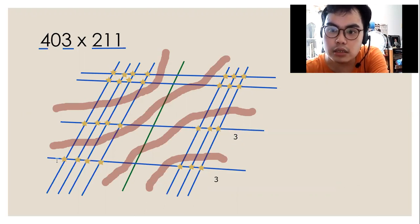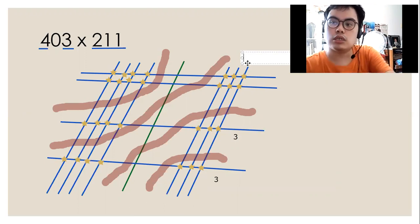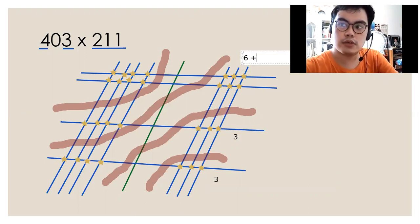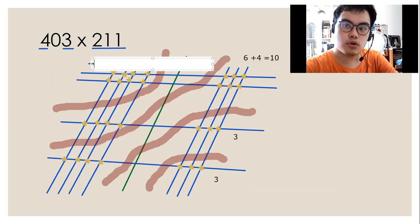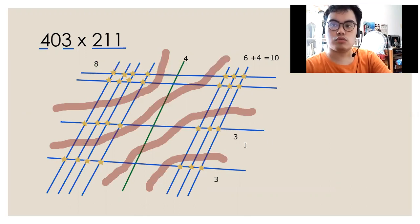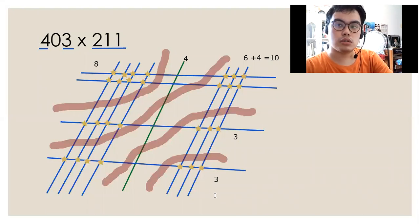Then in this group, since there are six on top and four on the bottom, six plus four equals ten. In this one, there are four stars. And here there are eight stars.